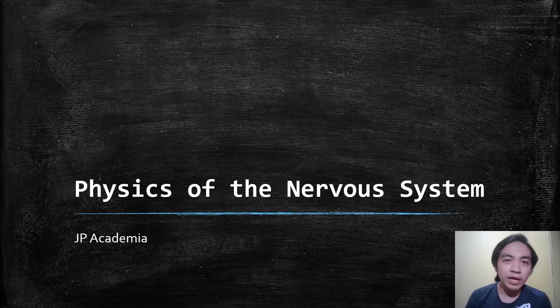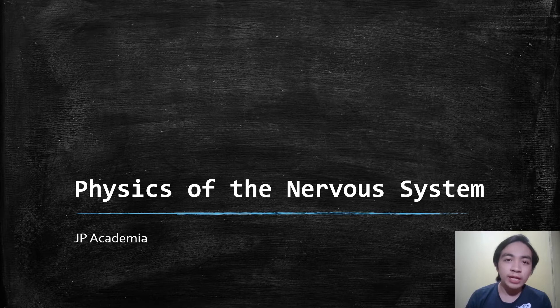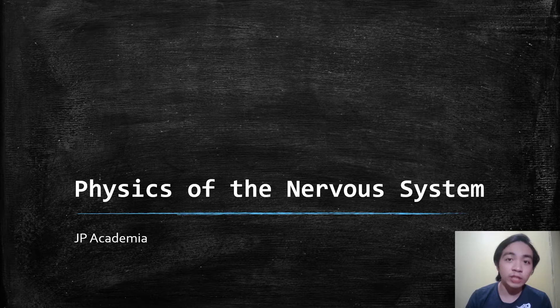Hi guys and welcome to JP Academia. We can model the information transfer of our body using electrical systems. It includes the operation of our brain, spinal cord, muscle and body organs. But what is the source of these electrical signals?